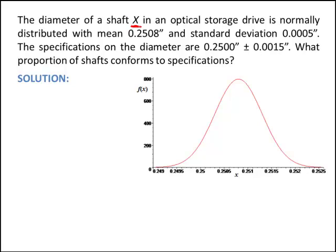So we know x, the diameter of these shafts, is normally distributed. I went ahead and drew the probability density function of a normal random variable with a mean of 0.2508 inches — that's where the bell of the curve is — and a standard deviation of 0.0005 inches. The standard deviation on a normal curve determines the spread of that normal random variable.